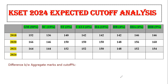Before going to the expected cutoff part, you need to know the difference between aggregate marks and cutoff percentage, because once KSET releases the cutoff PDF, it contains both cutoff percentage as well as aggregate marks.